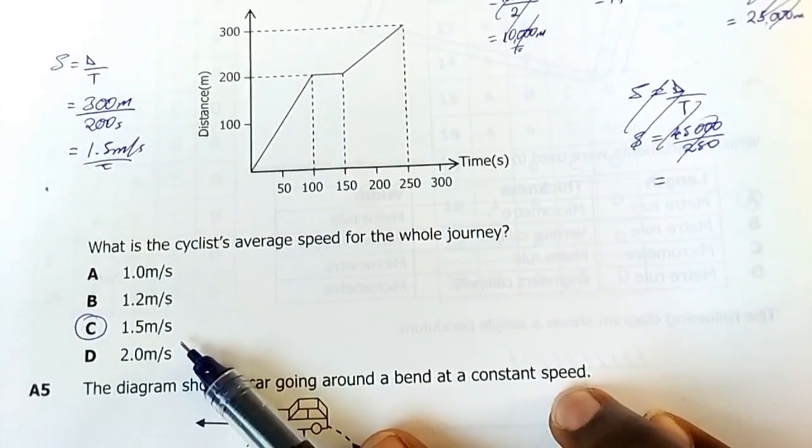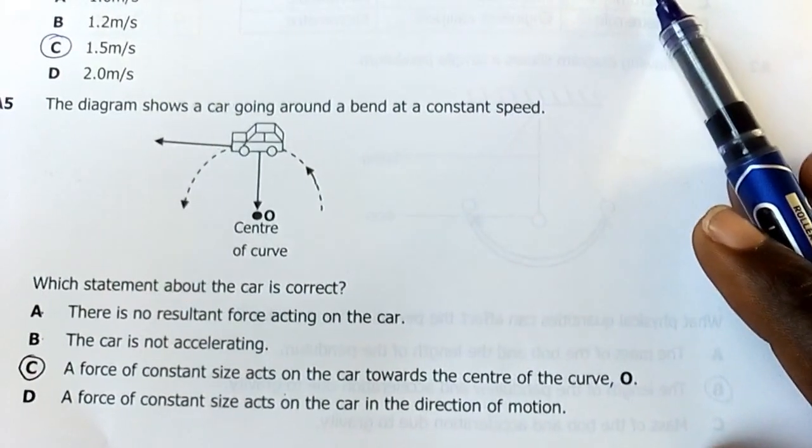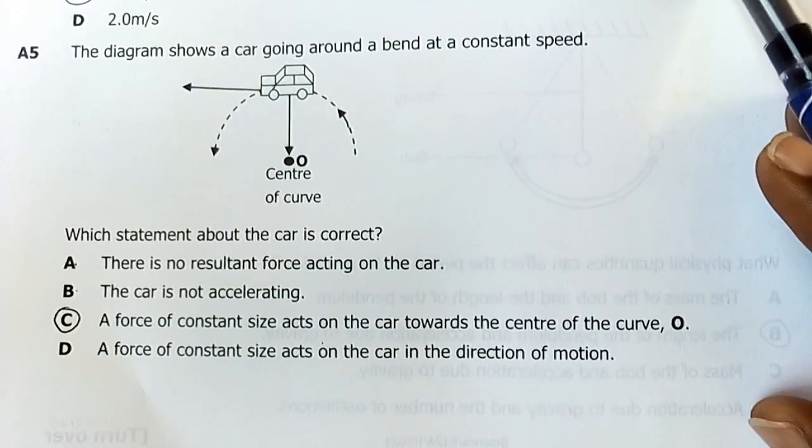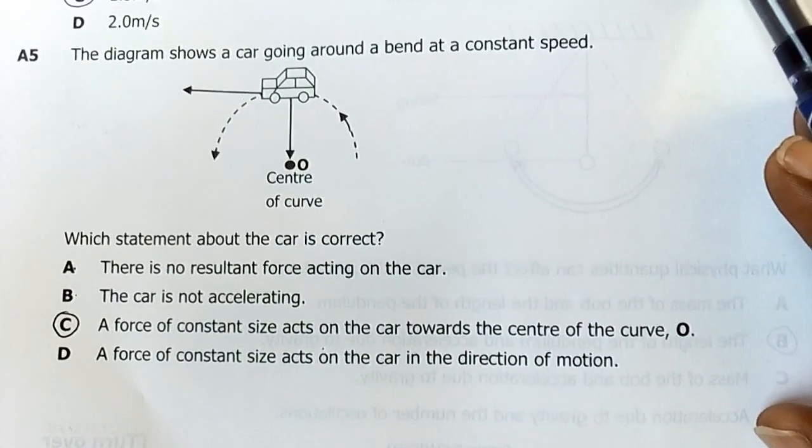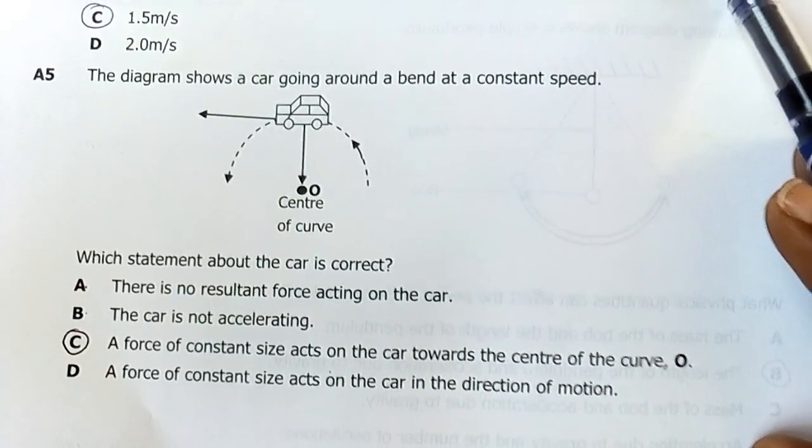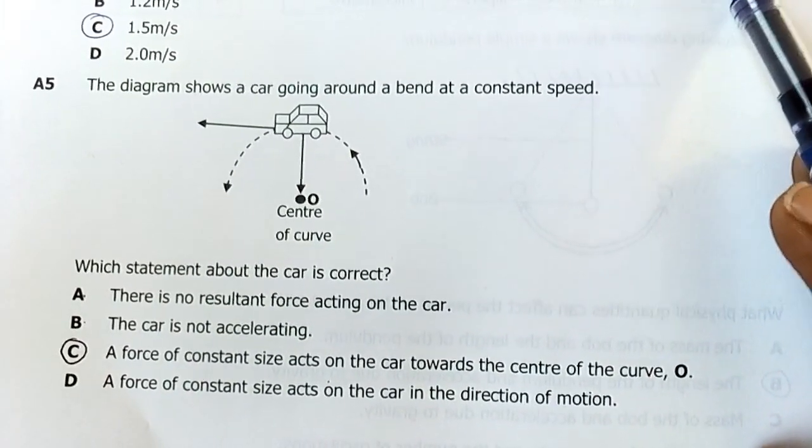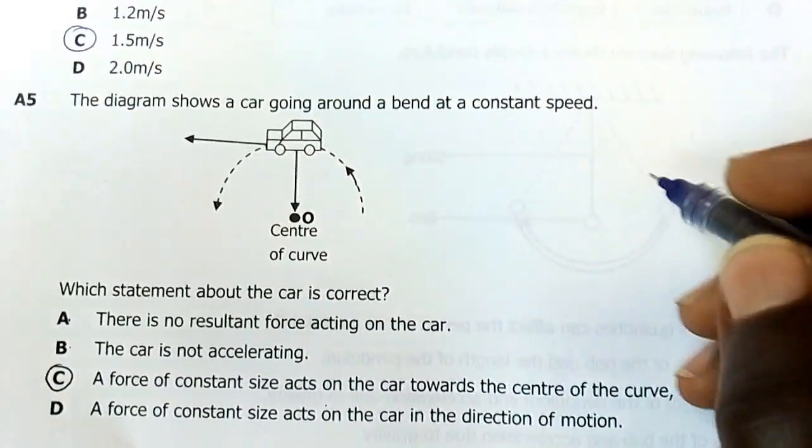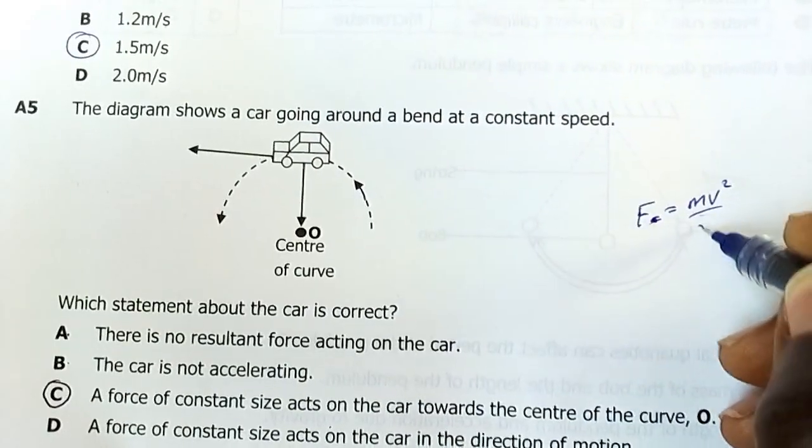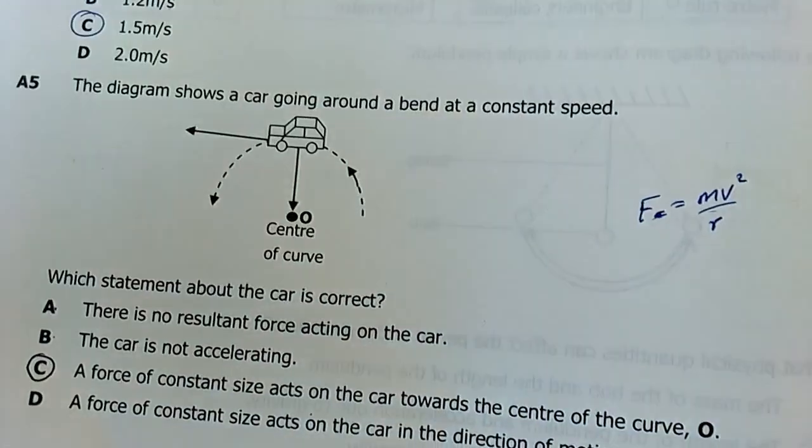Number five: The diagram shows a car going around a bend at a constant speed. Which statement about the car is correct? My answer here is A: a force of constant size acts on the car towards the center of the curve. There will be a centripetal force pulling the car. The formula is centripetal force equals mass times velocity squared over r, where r is the radius of the circular path in which that object is moving.